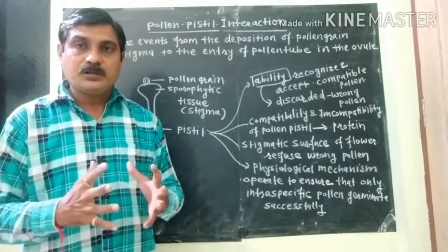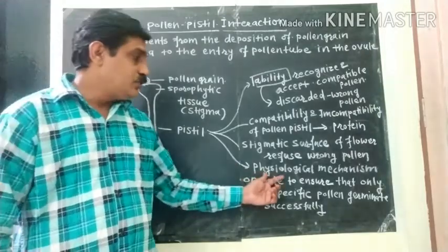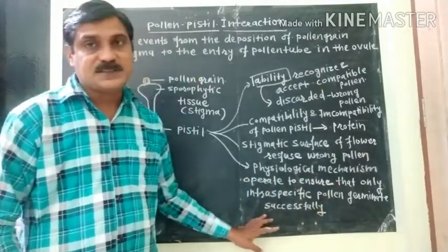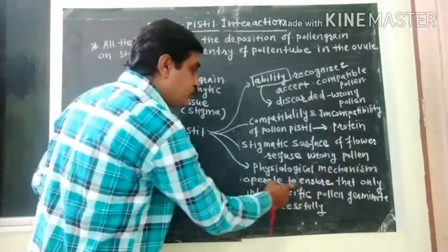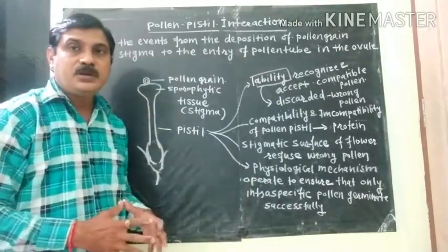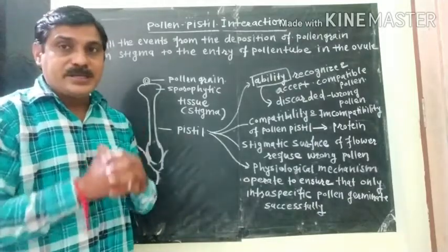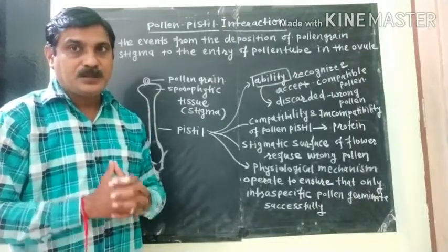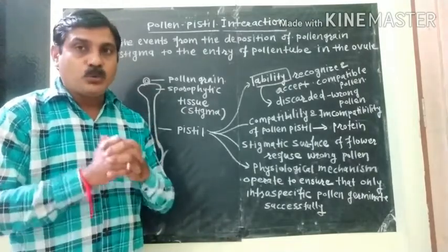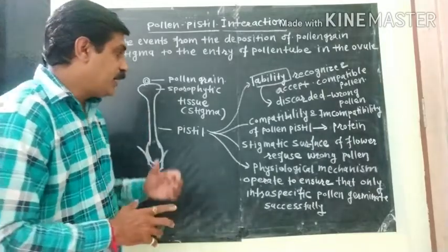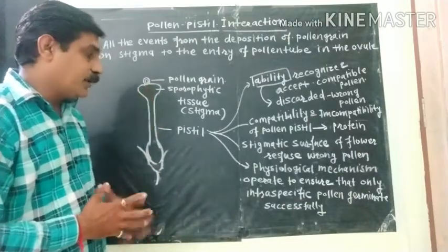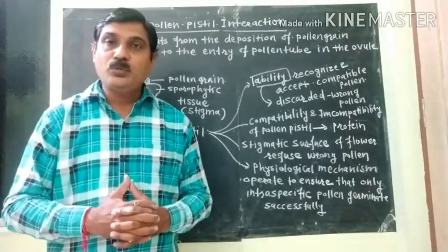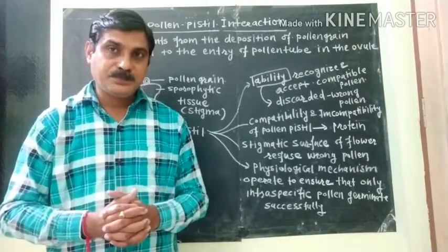A special physiological mechanism operates to ensure that only intraspecific pollen grain germinates successfully on the stigma. Incompatible pollen grain is discarded with the help of the special protein present in the stigma. This process involves first recognition, followed by either promotion or inhibition of the further mechanism.